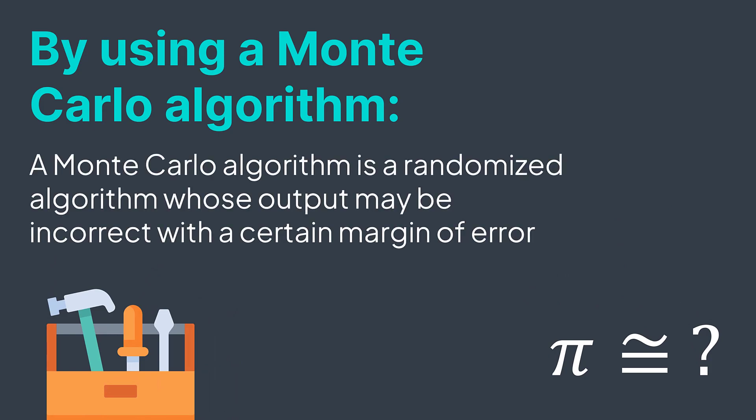A Monte Carlo algorithm is a randomized algorithm whose output may be incorrect with a certain margin of error. How can we make one to approximate Pi? Let's start.